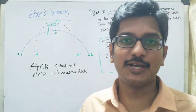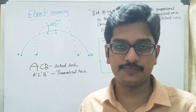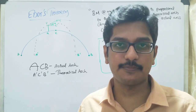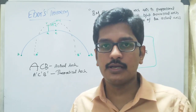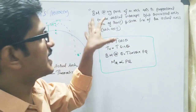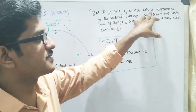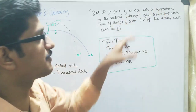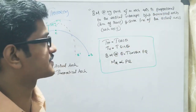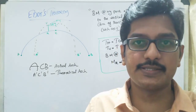Welcome to another video lecture. Today we will discuss the continuation of the arc section. Here we will discuss a new topic: Eddy's theorem. The theorem states that the bending moment at any point of an arc axis is proportional to the vertical intercept between the theoretical arc and the center line of the actual axis. That is the definition of Eddy's theorem.